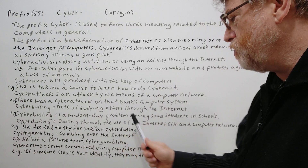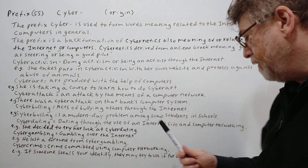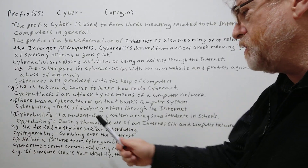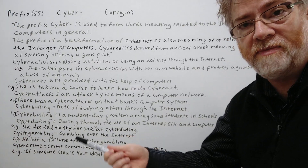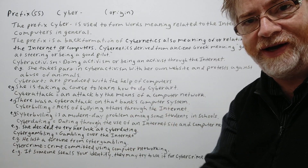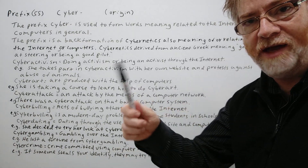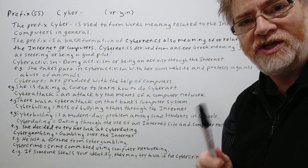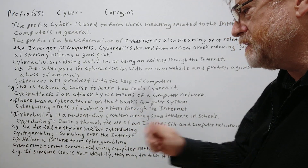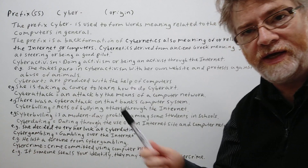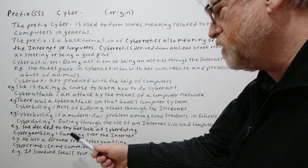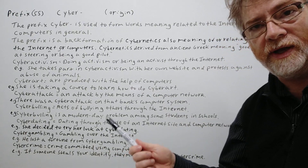Cyber dating — dating through the use of an internet site and computer networking. Example: She decided to try her luck at cyber dating. Maybe in the traditional way of finding a mate she didn't have much luck, so why not. Next: cyber gambling — gambling over the internet. He lost a fortune from cyber gambling.